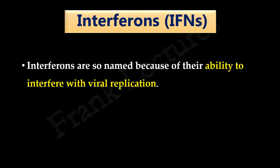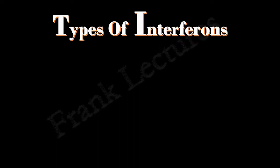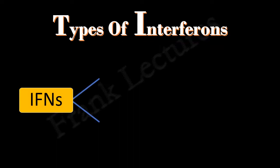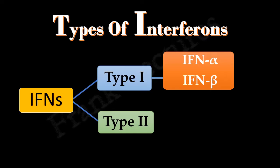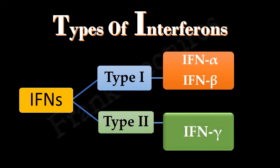Now the question is how? We will study the details of the process shortly, but first let us study the types of interferons. Interferons have been divided into two types: Type 1 interferons and Type 2 interferons. The basis of this classification is the type of cells that produce the interferon and the function of these interferons. Type 1 interferons comprise interferon alpha and interferon beta. Type 2 interferons comprise interferon gamma.